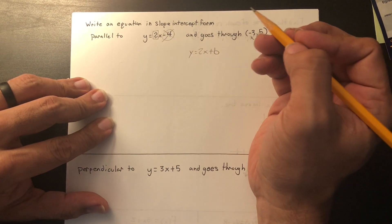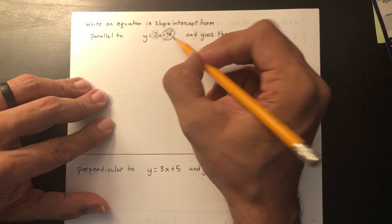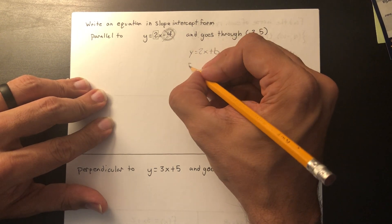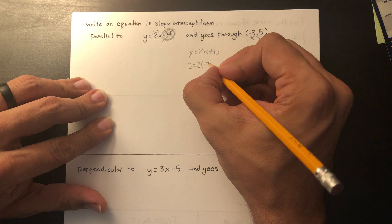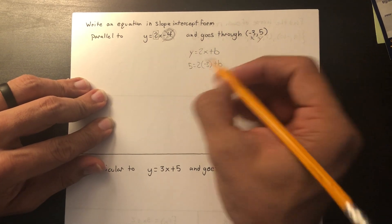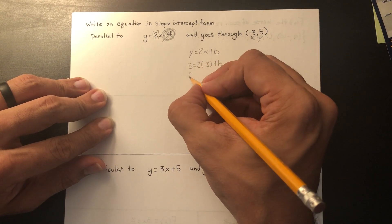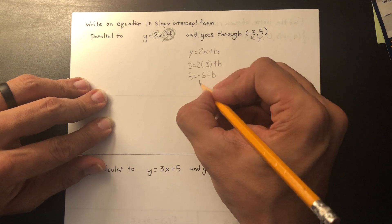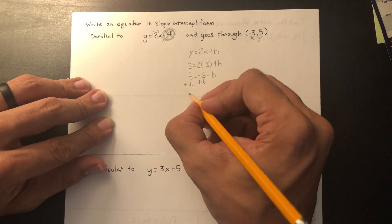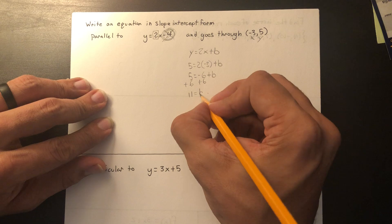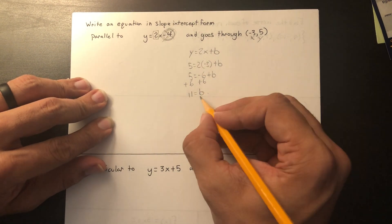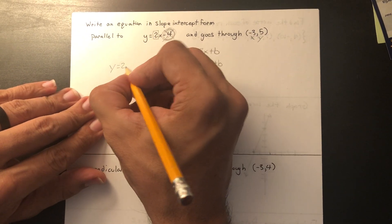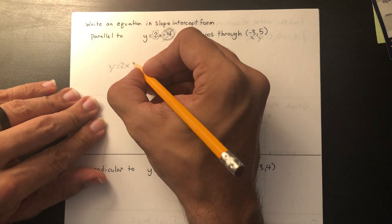All I want to know is the slope. A lot of you are really worried about this extra number here. Now I'm going to plug these numbers in. So the 5 goes where the y is. 2, negative 3, plus b. These are going to multiply. You're going to get 5 equals negative 6 plus b. Add 6 to both sides. And 11 equals b.